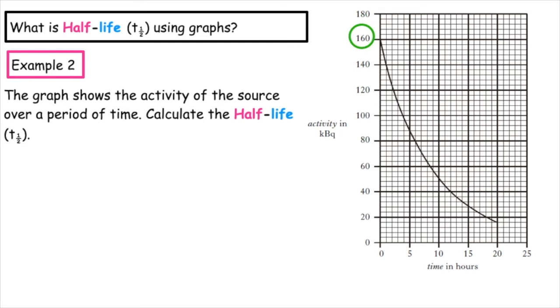If 160 is the activity and it undergoes one half-life, half of 160 is equal to 80. What we want to do is draw a line from 80 to where it meets the curve on the graph. And then we extrapolate that down to the x-axis.